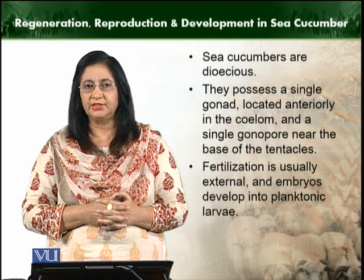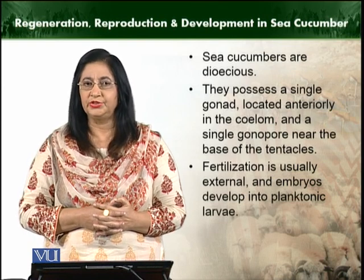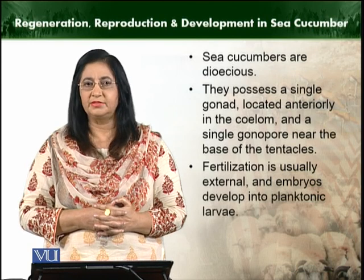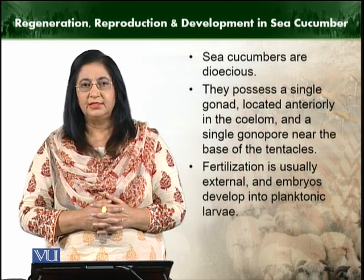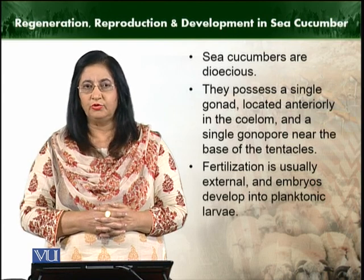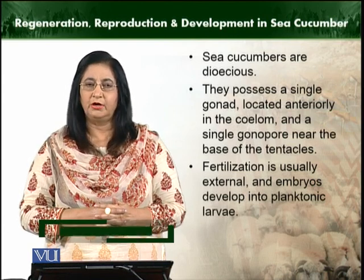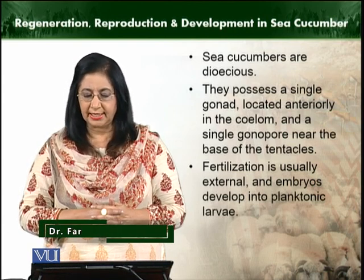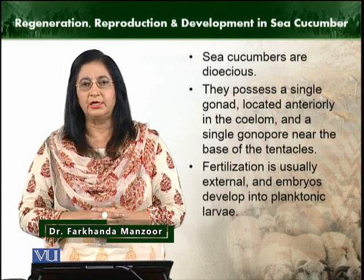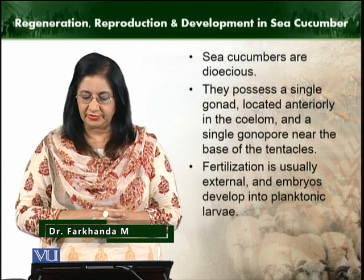Regarding reproduction, sea cucumbers are dioecious — male and female species are separate. They also possess a single gonad, which is located anteriorly in the coelom. The duct is known as the gonopore, and the gonopore is also single, located at the base of the tentacles.